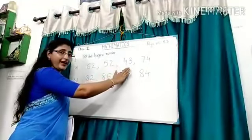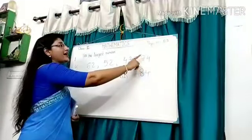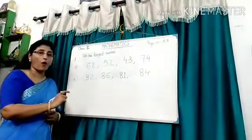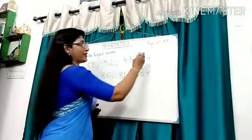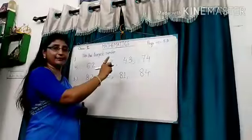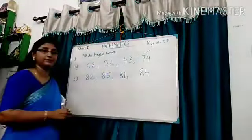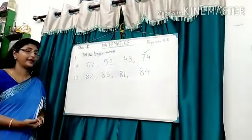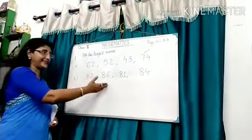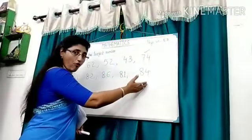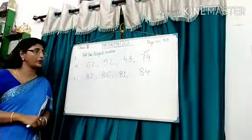Now we are going to learn about largest number. Look at the board. Here the numbers are 62, 52, 43 and 74. All numbers are two digit numbers, so see the tens place first. Here the numbers in tens place are 6, 5, 4 and 7. 7 is the largest number in all numbers. So, 74 is the largest number. Take the largest number, 74.